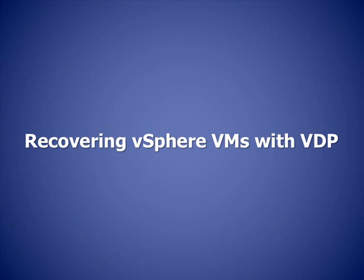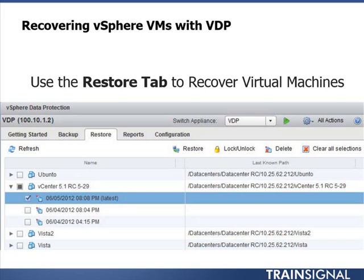With vSphere Data Protection installed and all virtual machine backups completed, I'd like to walk you through the process of recovering a vSphere virtual machine using vSphere Data Protection. The process is simple - you go into vSphere Data Protection, go to the restore tab, find the virtual machine you'd like to restore, then select the backup instance you'd like to recover. You could overwrite an existing virtual machine, restore it with a new name, or restore it inside a new ESXi host or datastore location. Let's go over to our vSphere 5.1 lab.